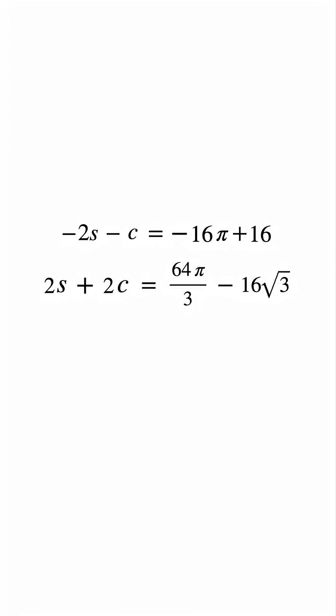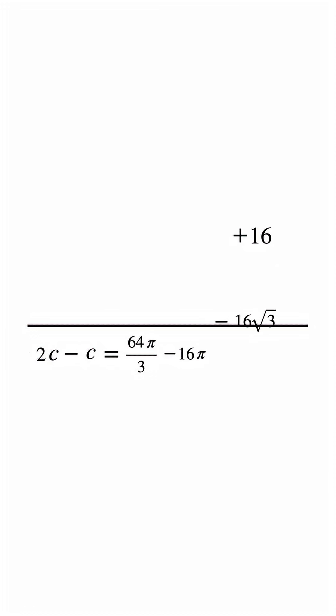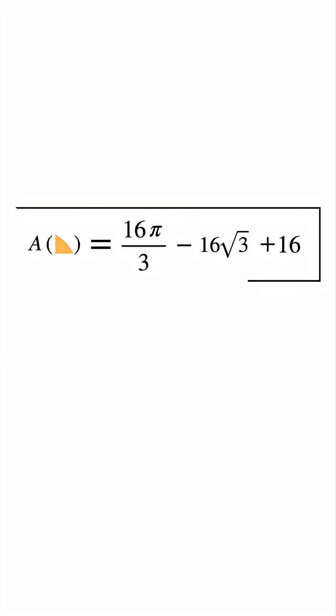Now multiply the first equation by negative 1 and add it to the second equation. The side pieces cancel out perfectly. Simplifying what remains gives the area of one corner piece. And that is the exact area of the shaded pizza corner.